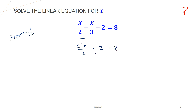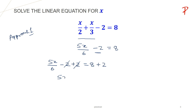We are solving approach 1. We just saw that x upon 2 plus x upon 3 gives us 5x upon 6, so the equation is 5x upon 6 minus 2 equals 8. Now to remove minus 2 from the left hand side, I will add plus 2 to both sides so the equation remains balanced. This plus 2 and minus 2 cancel each other, and what we have is 5x upon 6 is equal to 8 plus 2, which is 10.